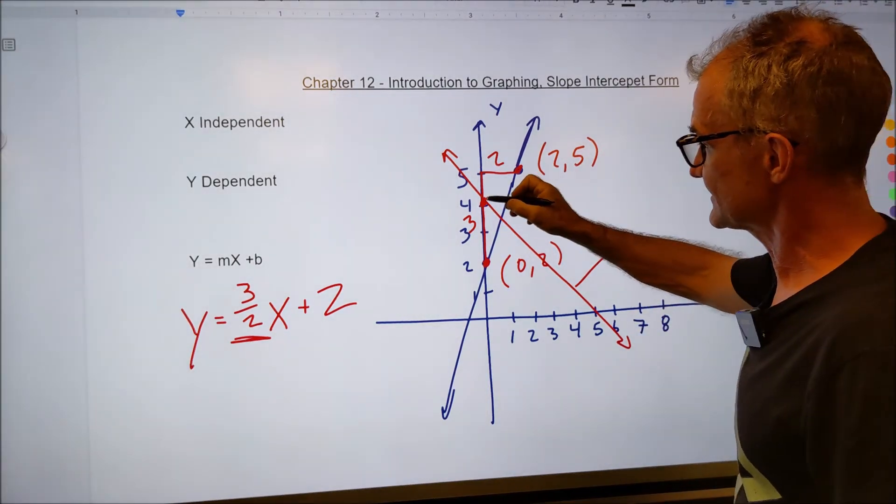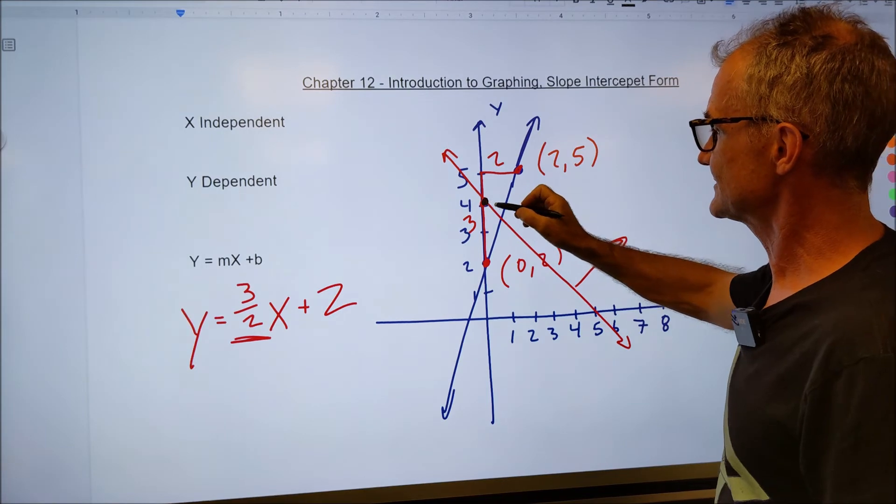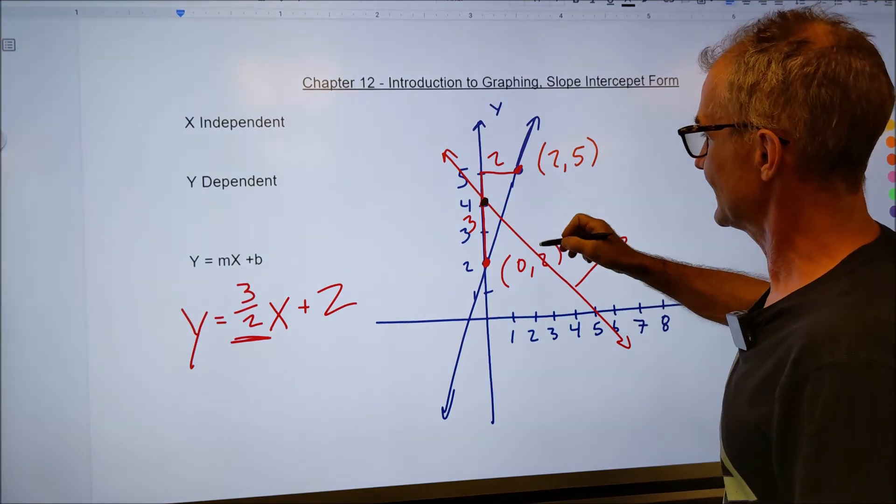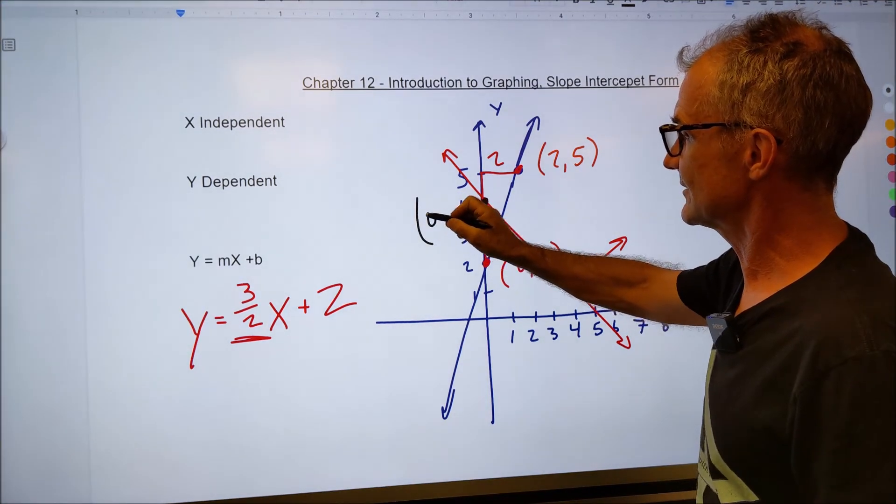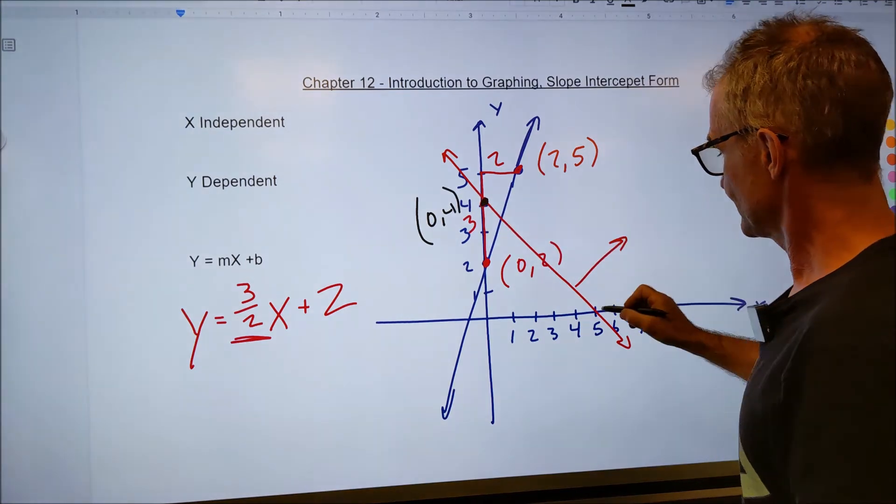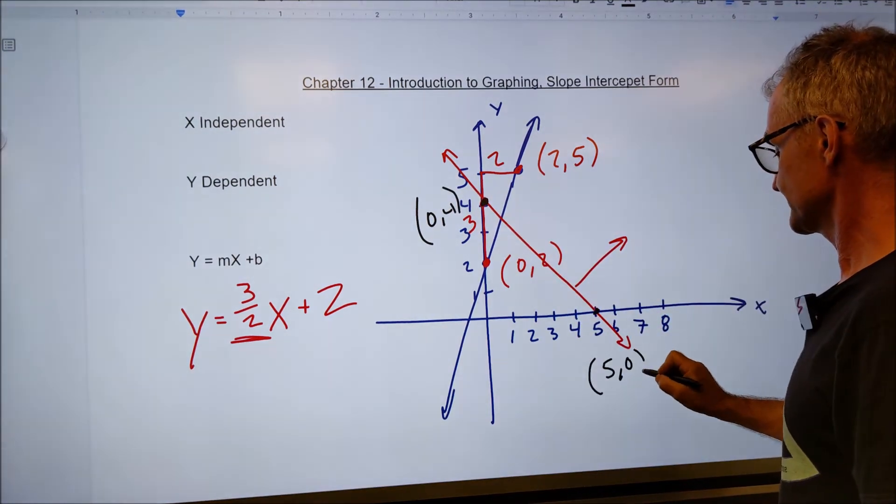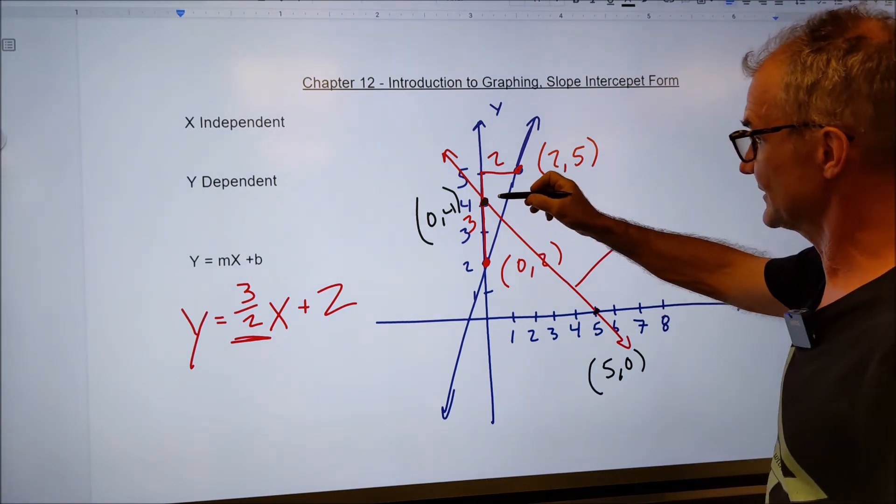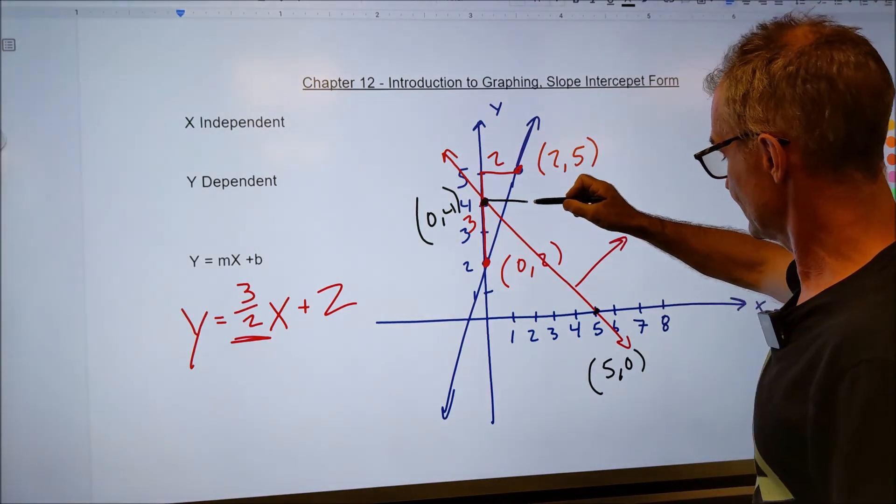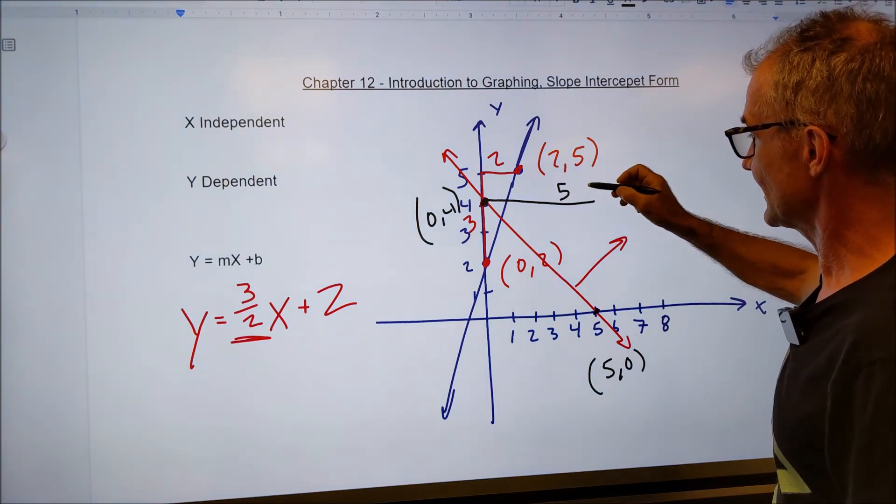So it crosses right here. I just pick any two points. This black point on my red line is over zero up four. This one is over five up zero. Then I figure out the slope. I go from zero to five. I go over five.